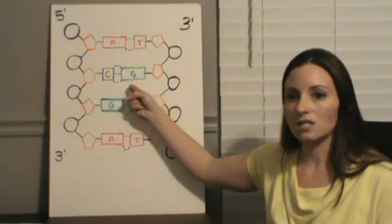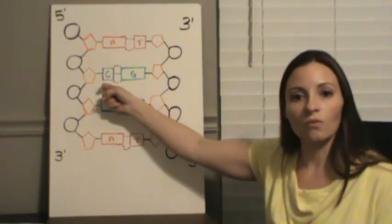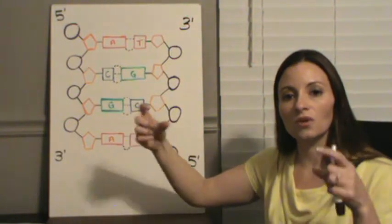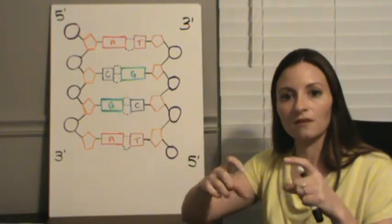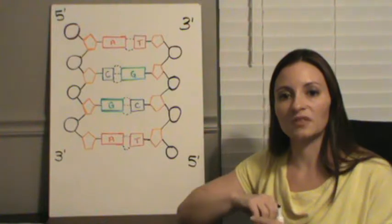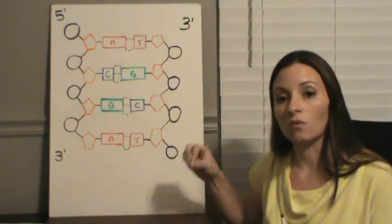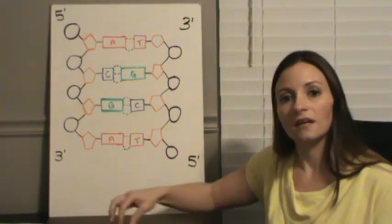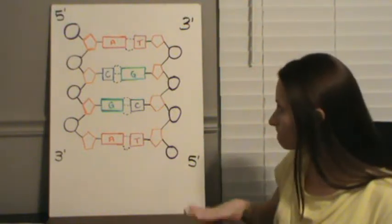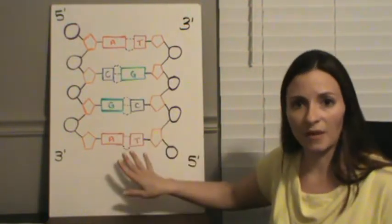As you notice, some of these are longer and some are shorter. So, we're going to pair one long with one short base, and they have to have the correct number of bonds, and because of that, guanine will only pair with cytosine, and adenine will only pair with thymine. This is called base pairing.